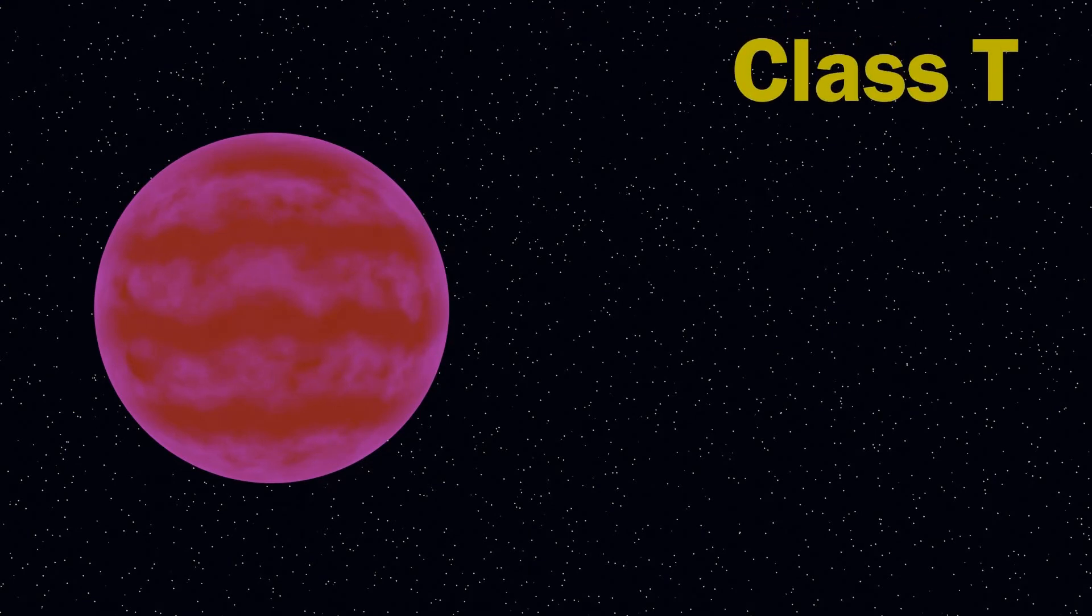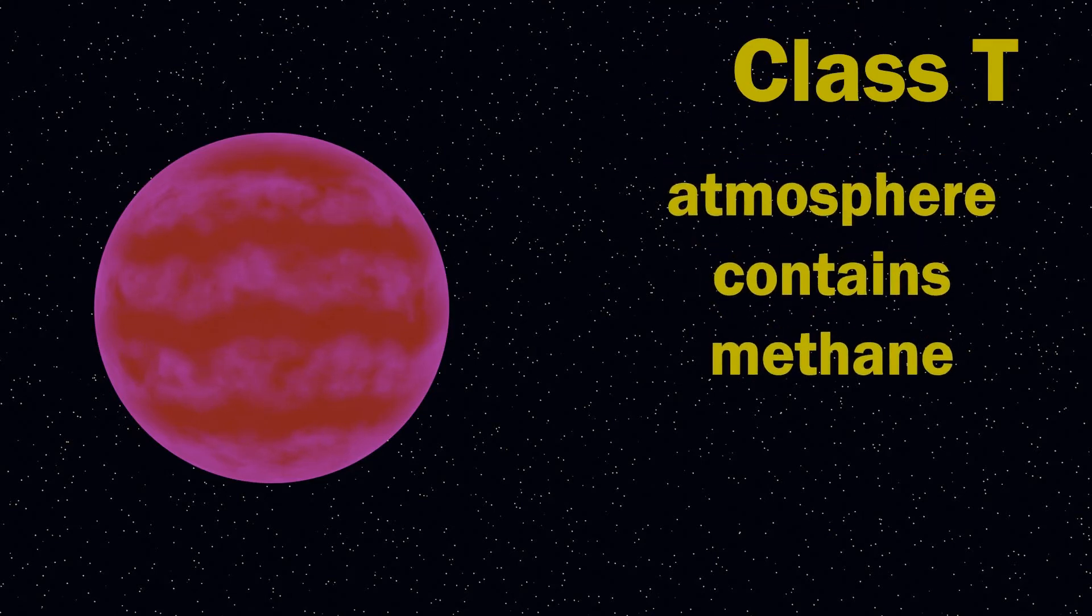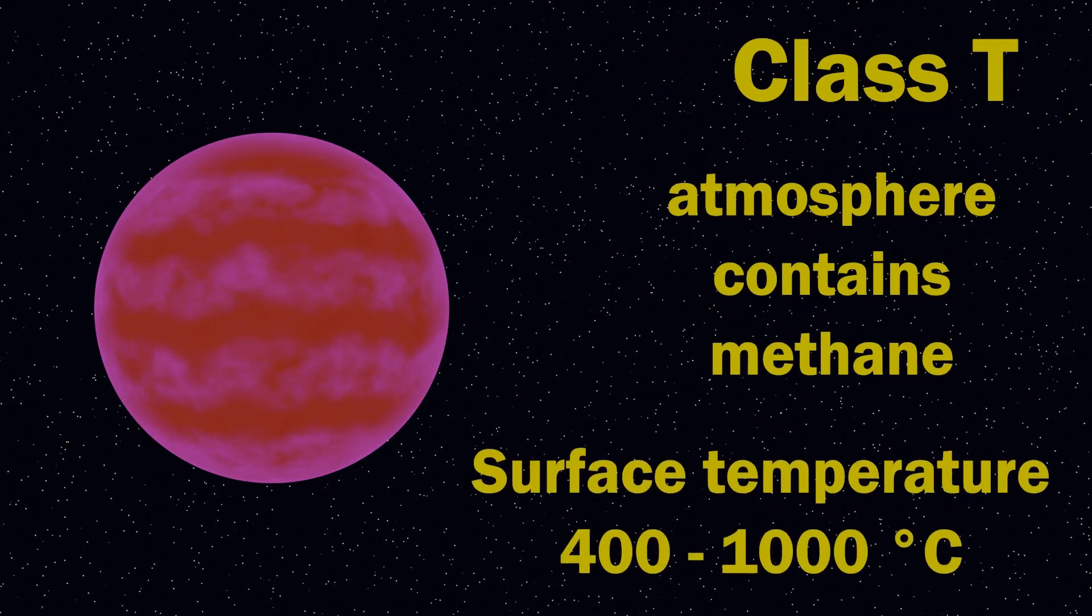And next, we come on to my favourite brown dwarf, which is the T-class of brown dwarf, and these are cooler still, and have an atmosphere containing a large amount of methane. The methane actually absorbs much of the red and green light emitted by this brown dwarf, and as a result, even though they're only very dim, they do emit light that will probably look magenta to human eyes. Finally, a purple star. These are even cooler, with surface temperatures between 430 and 1,030 degrees Celsius.